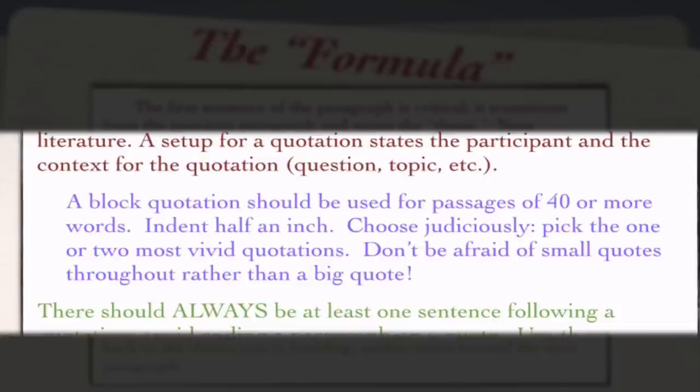A block quotation should be used for passages of 40 or more words. You indent it half an inch, choose judiciously — pick the one or two most vivid quotations — and don't be afraid of small quotes throughout rather than just one big quote. It doesn't necessarily have to be a block quotation, but the examples I'll show you in just a minute actually do use block quotations.